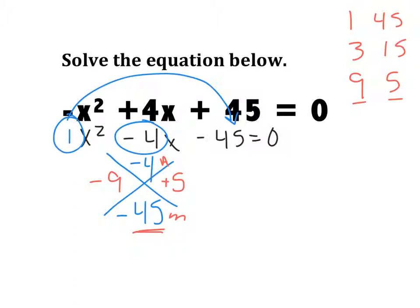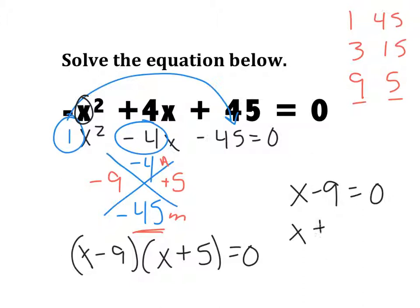All right. Now, I'm going to write my factors. Again, we use x. So, I've got x minus 9 and x plus 5 still equals 0. Why is that important? Because now I can write two small equations. x minus 9 equals 0 and x plus 5 equals 0. And so, my two solutions would be x equals 9 and x equals negative 5.